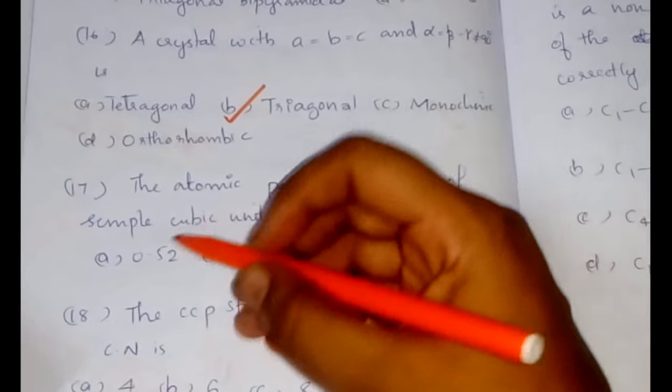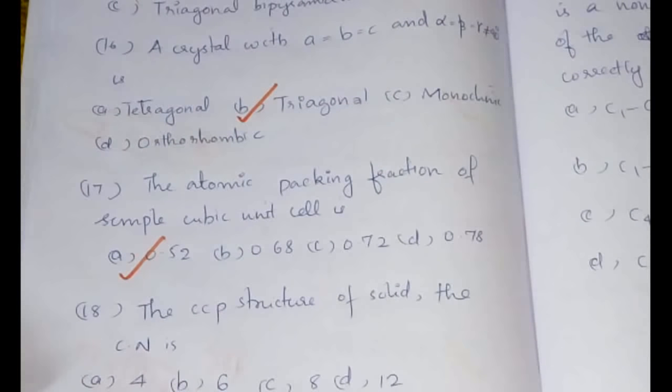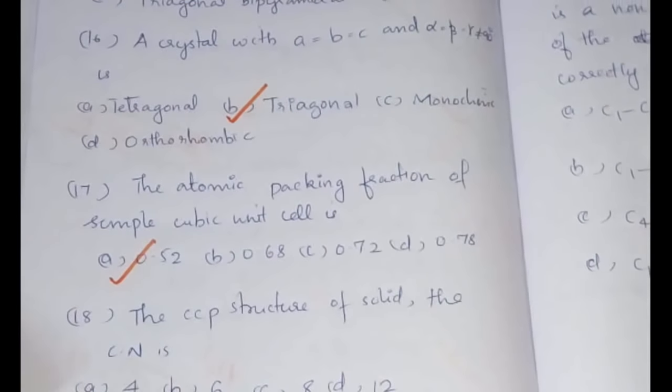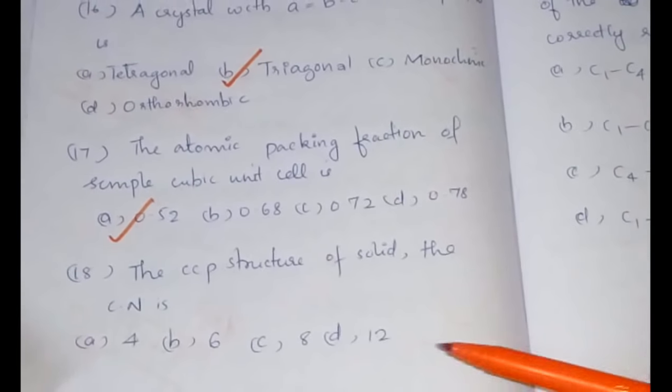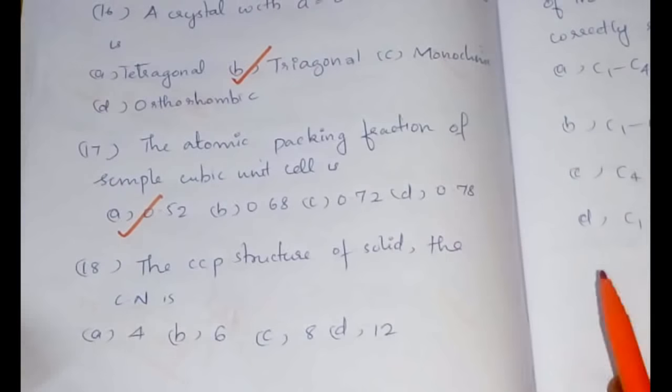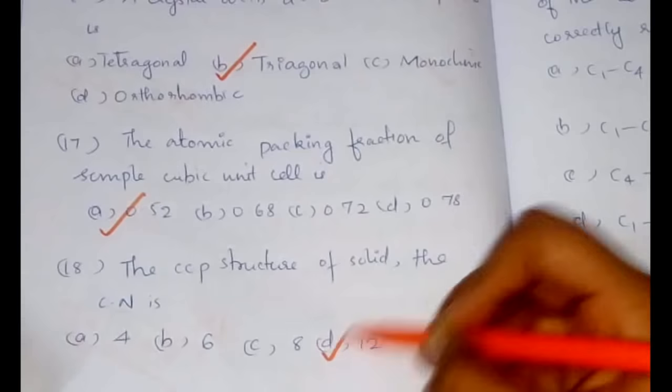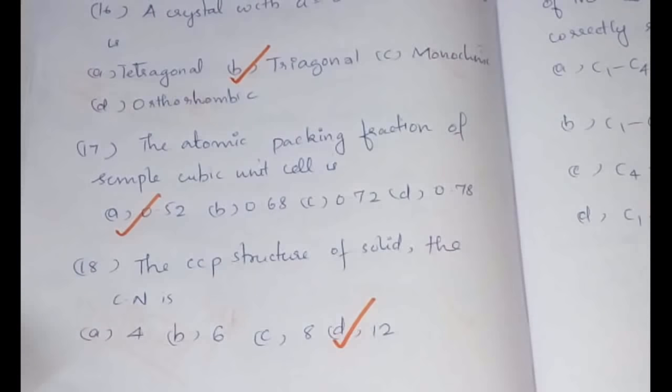The atomic packing fraction of simple cubic unit cell is 0.52. Even yesterday I told you to take a look into this one.